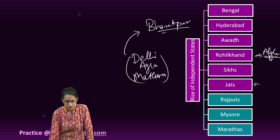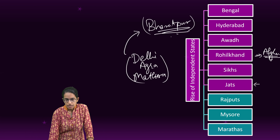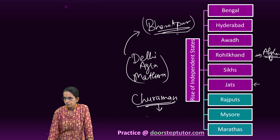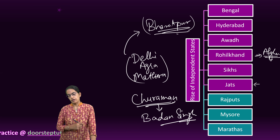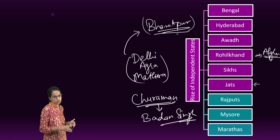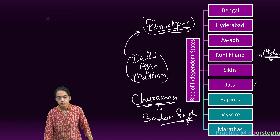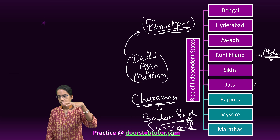Bharatpur, in present-day Rajasthan, became the capital of the Jhats. This independent state was led by Churaman and later by his nephew Badansingh. But the most important influence was the son of Badansingh, who was Surajmal. Surajmal's efforts are well known for establishing the Jhat state as an independent state.